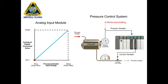The analog input module converts the 4 to 20 milliamp signal to a digital value ranging from 3277 to 16384. A 4 milliamp signal results in a value of 3277 and a 20 milliamp signal results in a value of 16384.